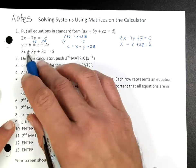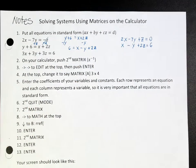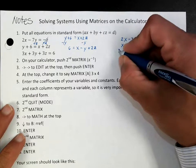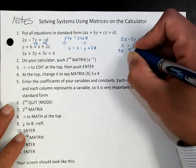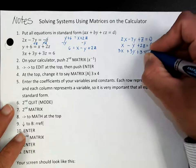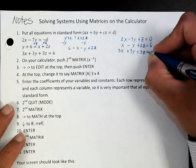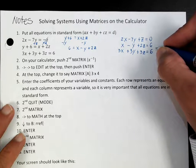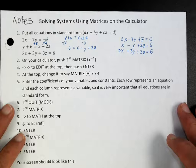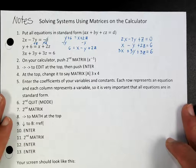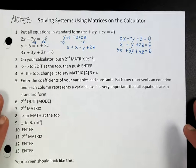Notice that the third equation is already in the form that we wanted, which is x, y, and z equal to 6. So we're going to write 3x plus 3y plus 3z is equal to 6. Now, the next steps are all going to happen in the calculator.